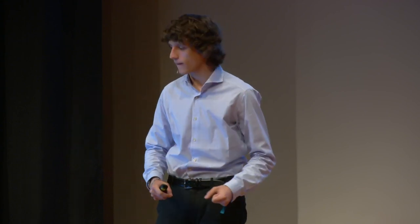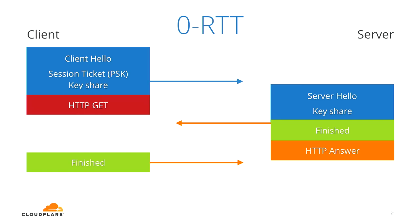The client opens a connection to a server it's connected to before and sends: client hello, session ticket, key share for Diffie-Hellman, and then early data — an application data blob, for example an HTTP request, encrypted with the PSK. The server decrypts the session ticket, finds the PSK, uses it to decrypt the early data, mixes the two key shares, mixes in the PSK to make a new key for the rest of the connection. We were able to send application data immediately upon opening the connection — completely removing the performance overhead of TLS.